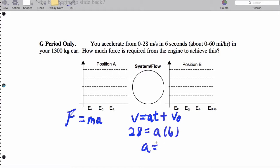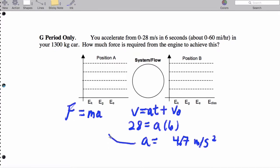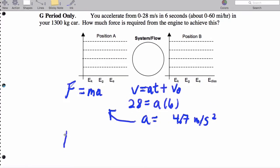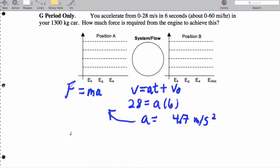So, A ends up being 4.7 meters per second squared. And then when we plug that into F equals MA, the force on the car equals M, which is 1300, times A, which is 4.7.